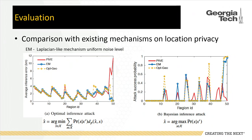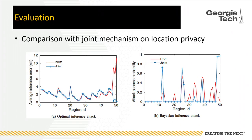We compare our mechanism with existing mechanisms on location privacy, focusing especially on the isolated regions. Looking at two figures — one measuring average inference error and one measuring Bayesian inference attack success probability — on the isolated regions (48 to 50), we perform better than existing results. There is another solution that also combines different privacy notions, but it requires careful tuning of noise parameters; without careful tuning, it also suffers in isolated regions.